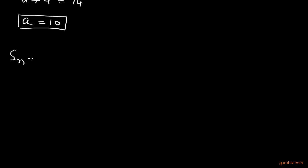Now we can easily find out the sum of first 51 terms by the formula Sn equals n over 2 into 2a plus n minus 1 into d. What is n? n is 51. And what is d? d is 4.